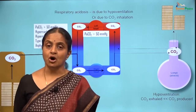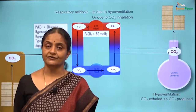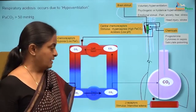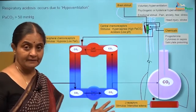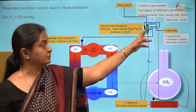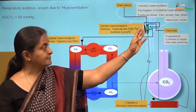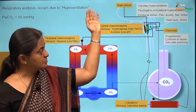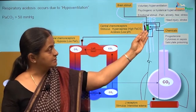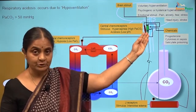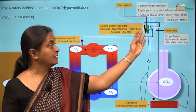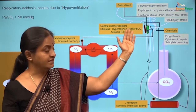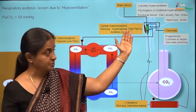Let us move on to causes of respiratory acidosis. We have seen earlier that there are stimuli which can act on the respiratory center. In respiratory acidosis, the respiratory center does not work as well as it should — it does not respond to an increase in carbon dioxide. That is why there is respiratory acidosis.